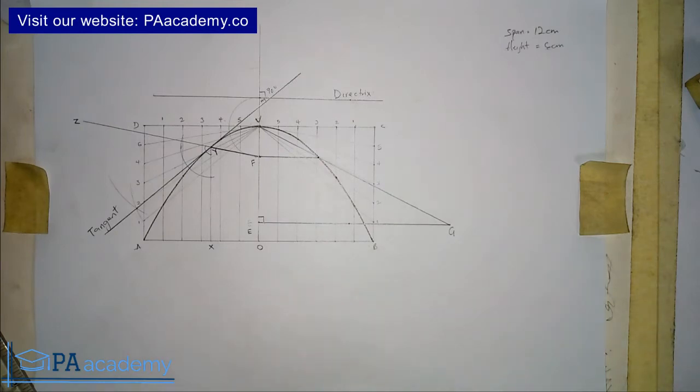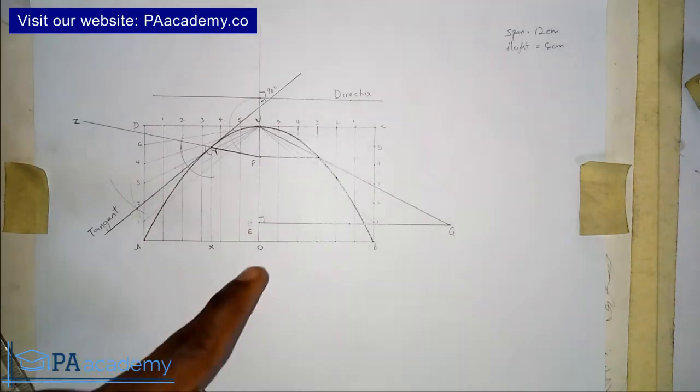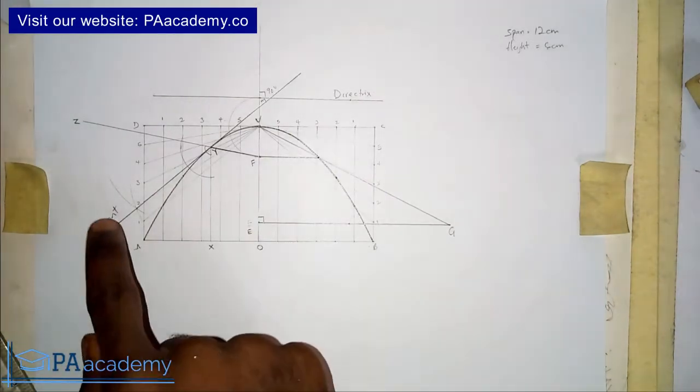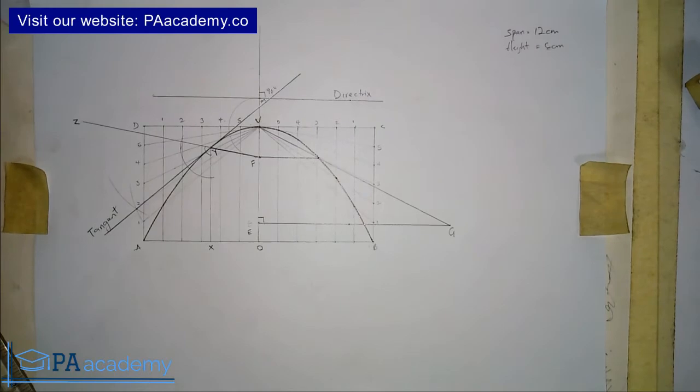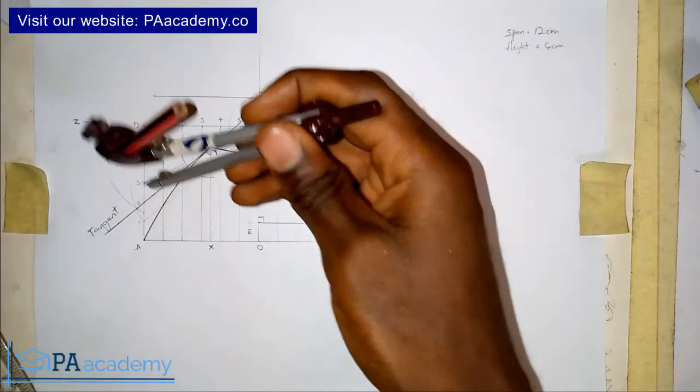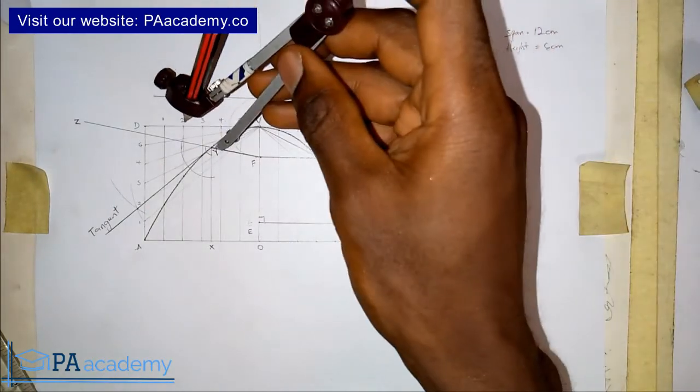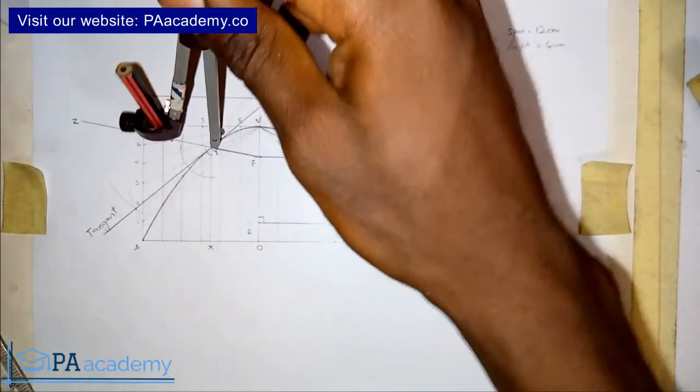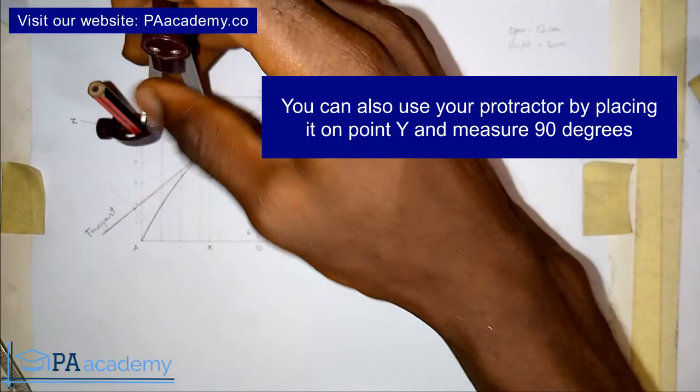A normal and a tangent, they are always perpendicular. So in order for us to get the normal, we are going to draw a line that is perpendicular to the tangent from this same point Y. So in doing this, we are going to bring back our compass. So on the tangent now, we are going to draw a semicircle on the tangent so that we can get to the normal.